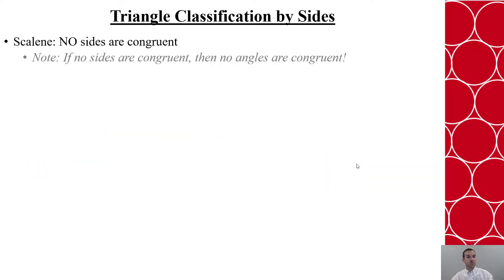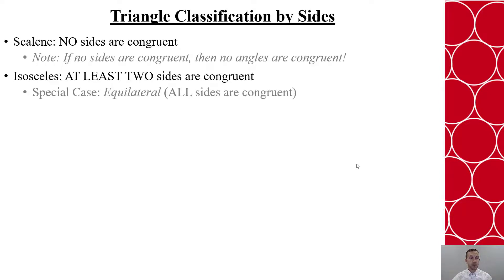Now, if I'm measuring and classifying by sides, I'm looking at those measurements and seeing how they compare. If the triangle is scalene, then no sides are congruent. And it's also important to recognize that the number of congruent sides corresponds with the number of congruent angles. So if no sides are congruent, then no angles are congruent. If two sides are congruent, then two angles are congruent. And that'll be helpful as we work on classification.